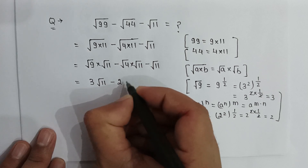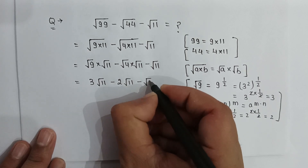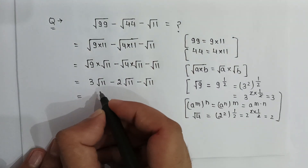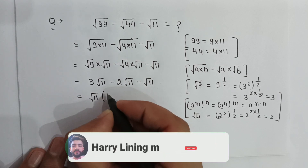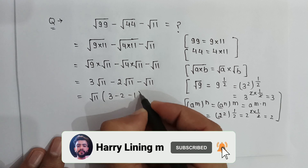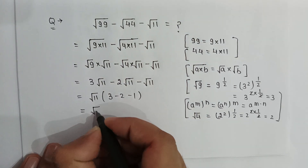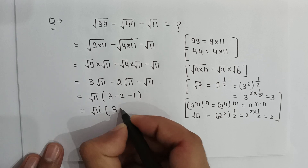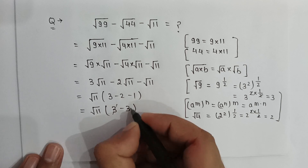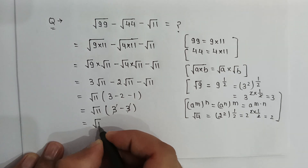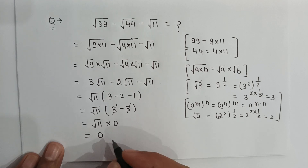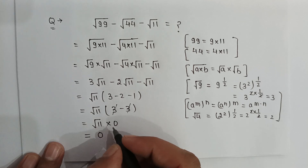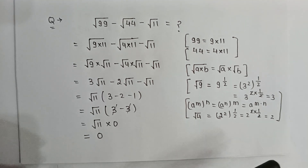If we take square root of 11 common from all these terms, it will be square root of 11 multiplied by the quantity 3 minus 2 minus 1, which equals 3 minus 3, giving 0. So it will be square root of 11 multiplied by 0, and the answer is 0, because any number multiplied by 0 gives 0. The answer of this expression is 0.